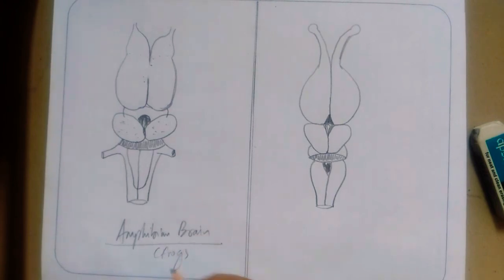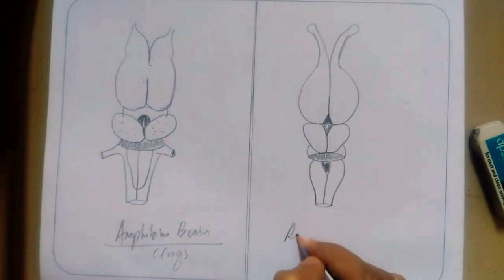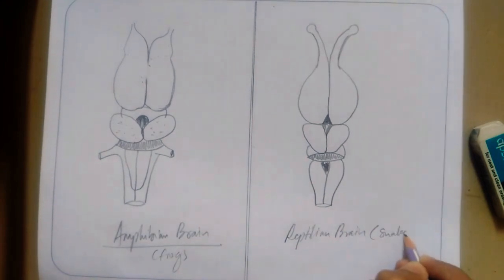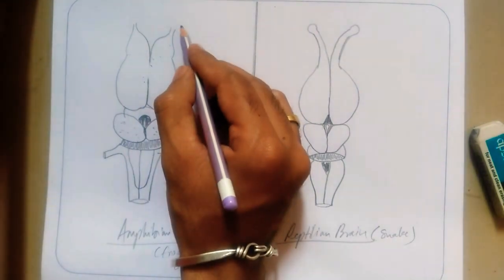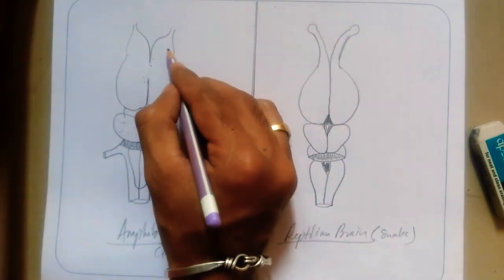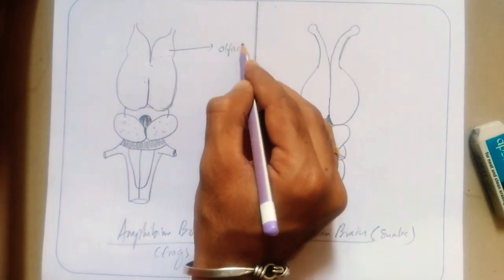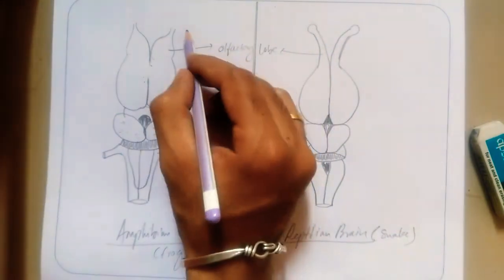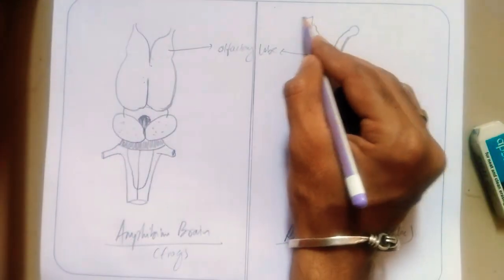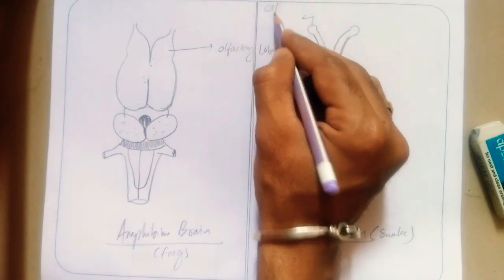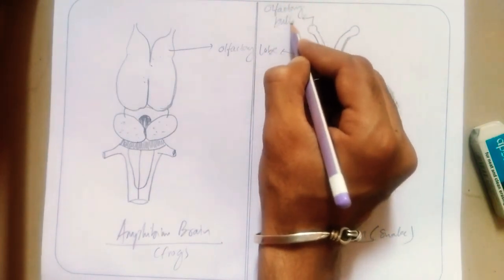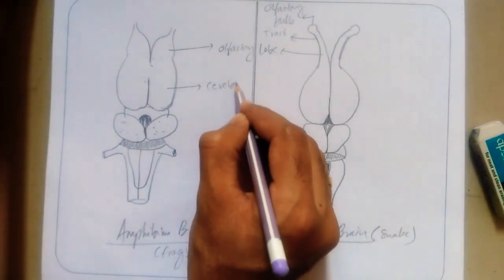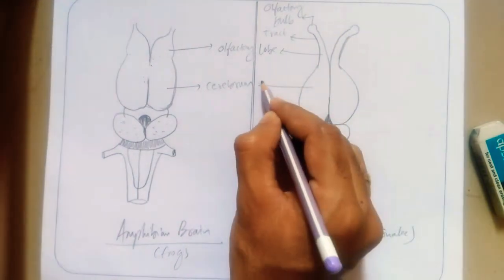So these are the two diagrams — the amphibian brain, for example the frog, and the reptilian brain, for example the snake. For the amphibian, you can write olfactory lobe directly. For the snake, they have extra structures: the olfactory bulb, the olfactory tract, and then the cerebrum, which is the same for both.